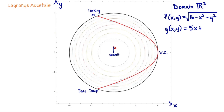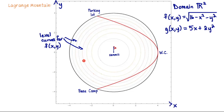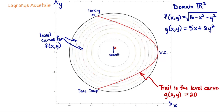We're going to reinterpret this topographic map in terms of level sets of functions. The first function f is the mountain: z equals f of x, y equals the square root of 16 minus x squared minus y squared. The second function g is set up so that the path we're following is a level curve for g. Let g of x, y equal 5x plus 2y squared. The domain R² is the domain for both f and g, and the concentric circles are level curves for f.